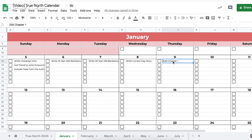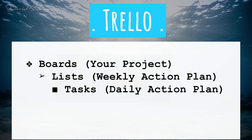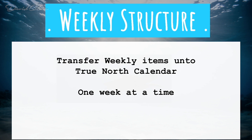So writing becomes our number one priority. Trello has boards for your main project, lists for your weekly action plan, and cards for your daily tasks. Transfer those items onto the True North Calendar one week at a time, because we need to calibrate for new things that come up — like a new book idea that requires rearranging your schedule.